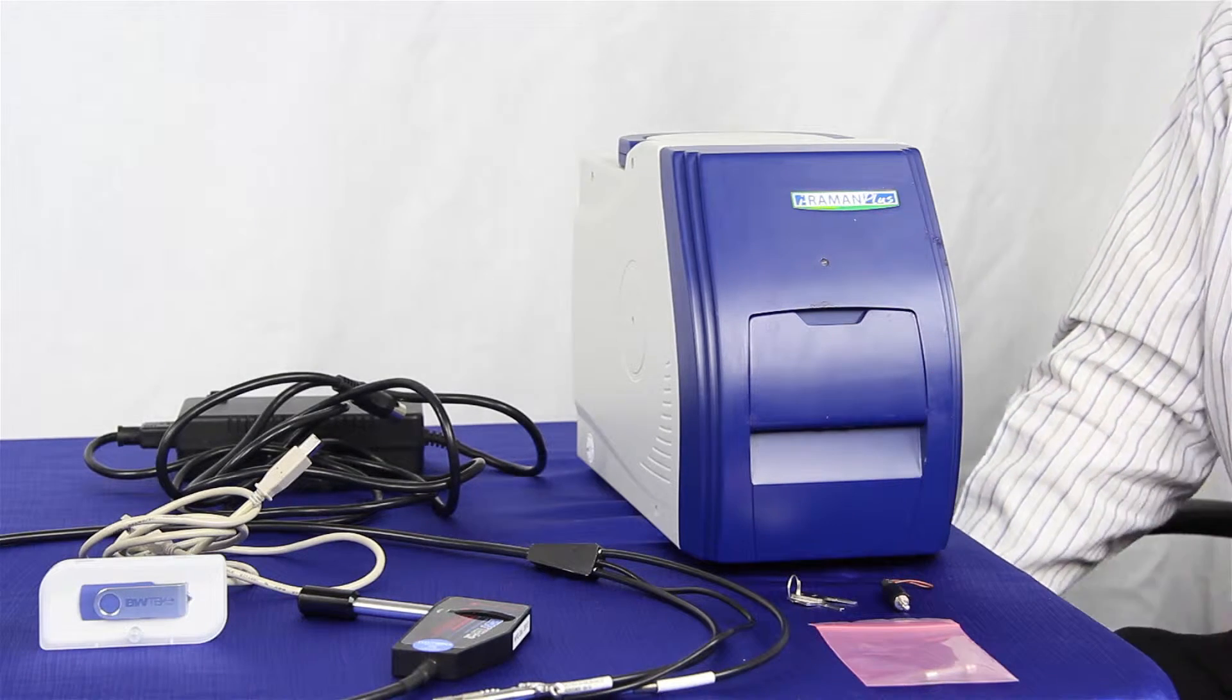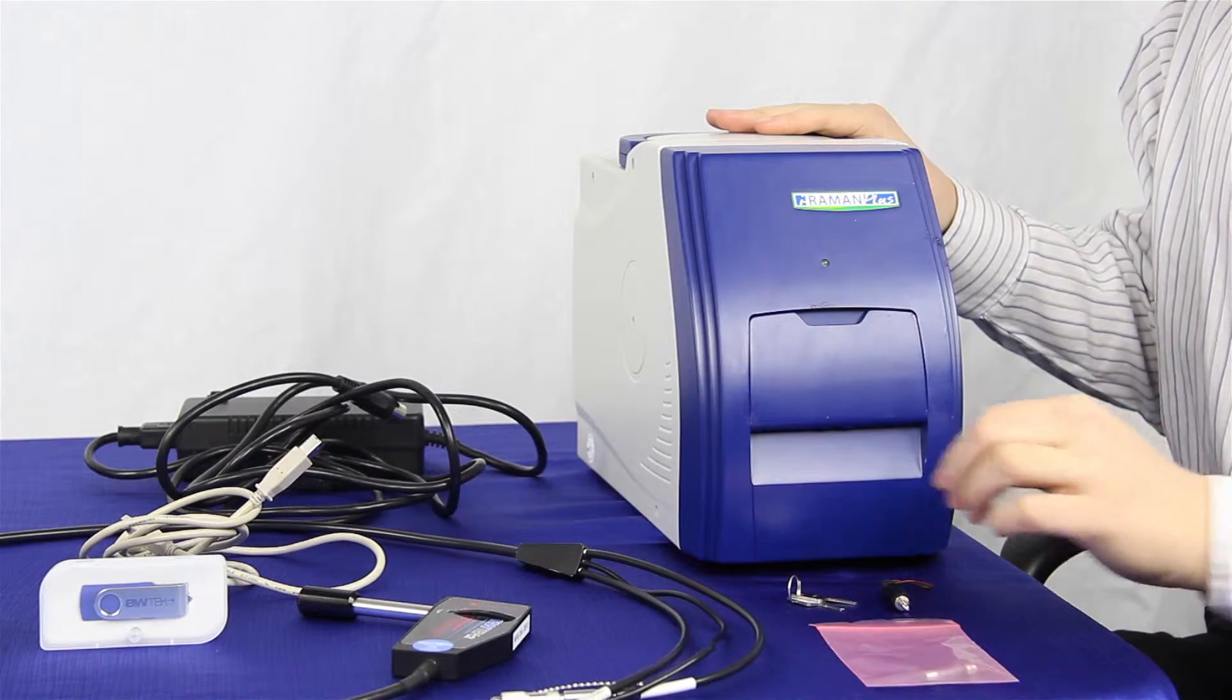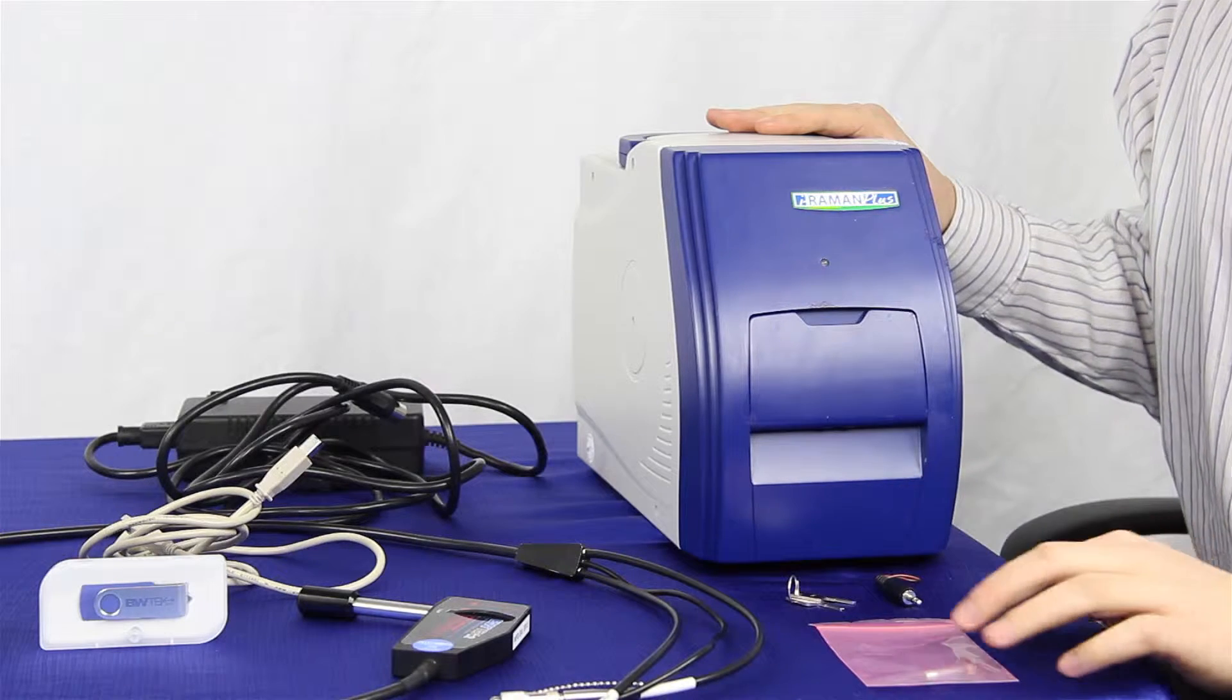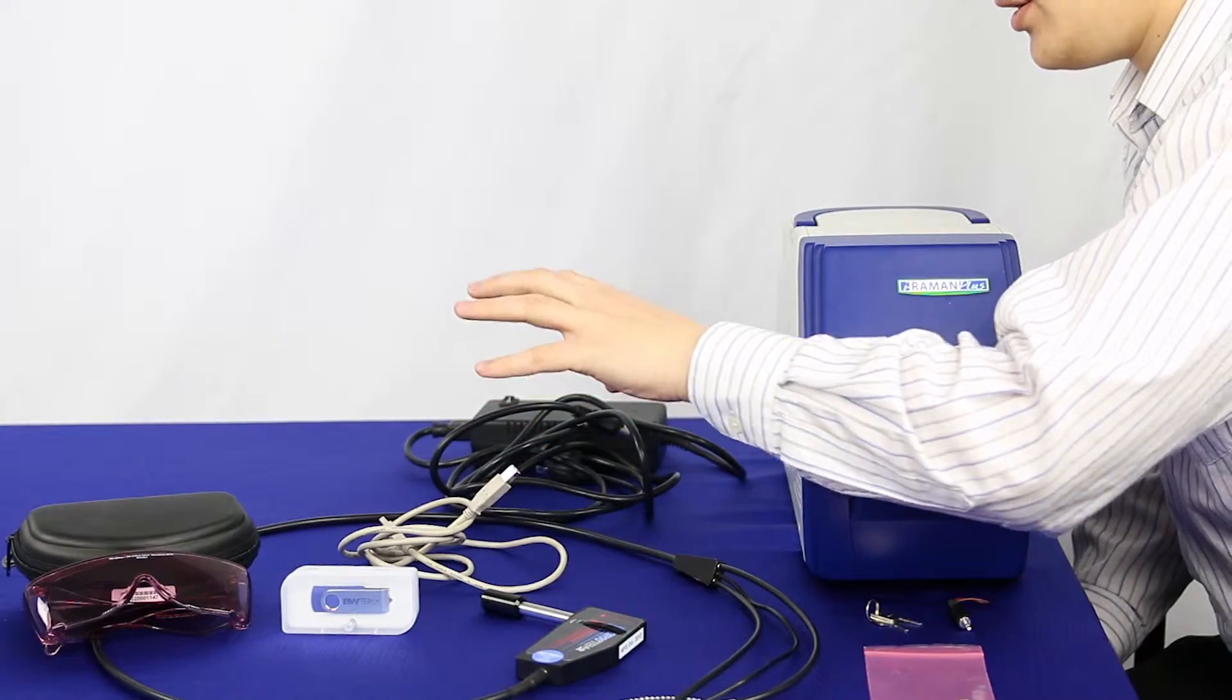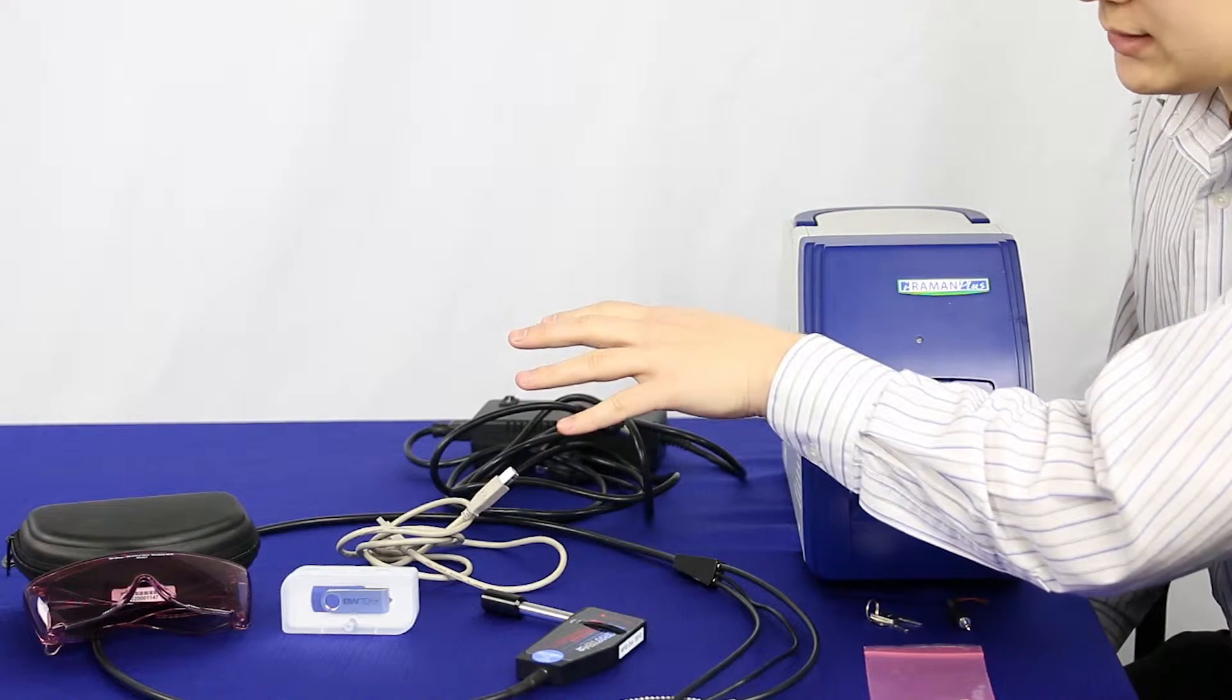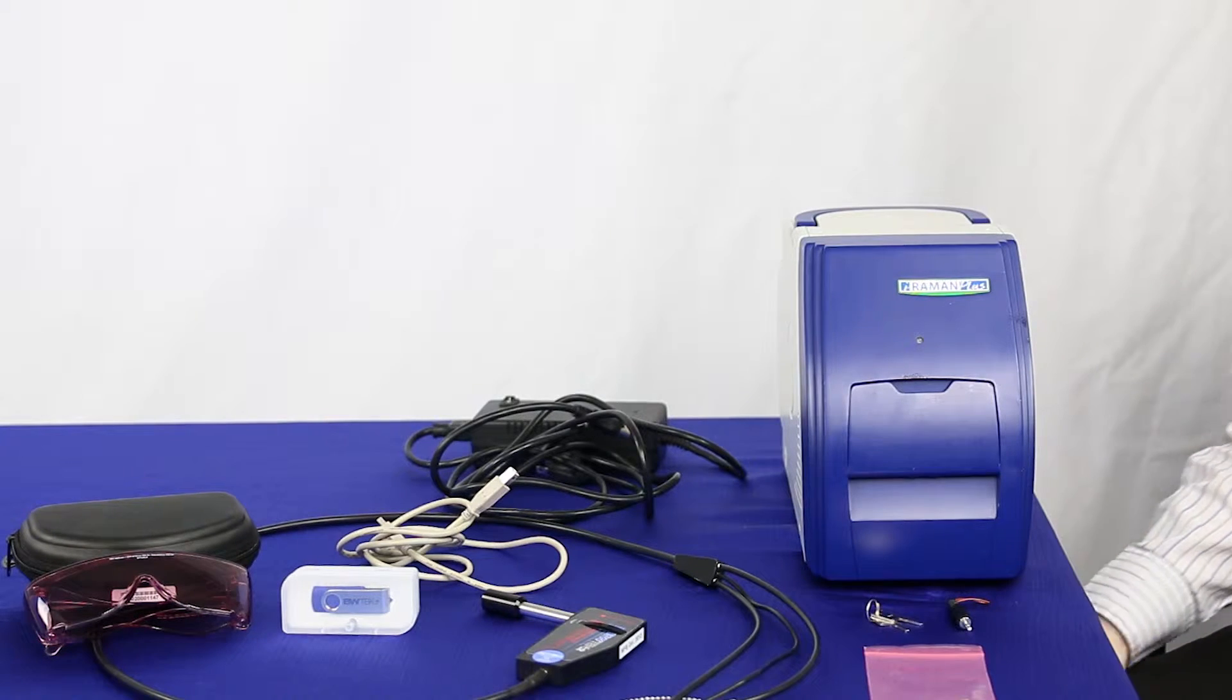Anytime you receive an iRamen Plus, you're going to receive the unit itself, your Raman probe, laser keys, an interlock, a fuse, an extra fuse, a power supply, USB cords, laser safety glasses, and a USB containing all the proper documentation and software that you need.